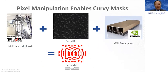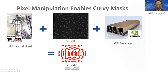Moving on to the general multi-beam-based curvilinear mask workflow: curvilinear masks are enabled by the multi-beam mask writer, curvilinear ILT that produces target mask shapes in curvilinear form, and GPU acceleration. What's notable about all these technologies is that they are all pixel-based computations.